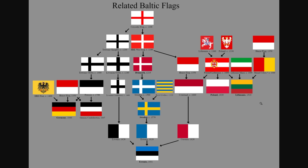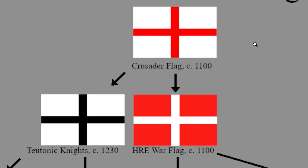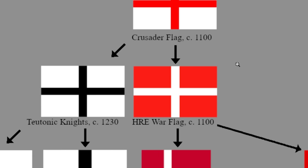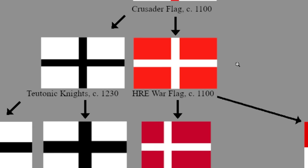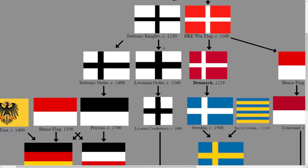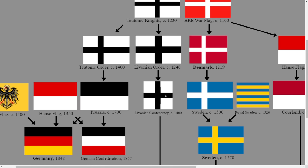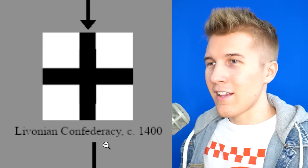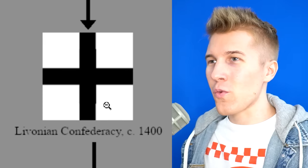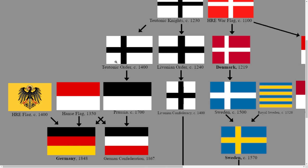Related Baltic flags and how they have evolved over the years. We have the Crusader flag established in the 1100s. That turned into the Teutonic Knights, as well as the Acher Reef flag. The Teutonic Knights turned into the Livonian Order. Then — whoa, look at that! It's kind of like a Swiss kind of flag. Teutonic Order looking very Nordic right here. Then they turned into Prussia.